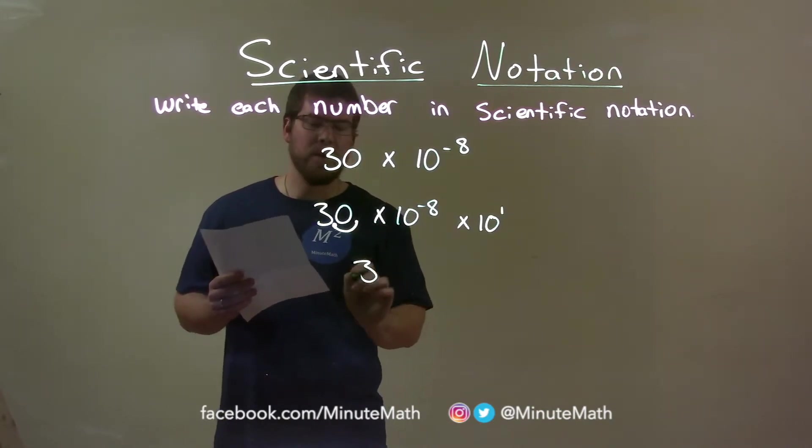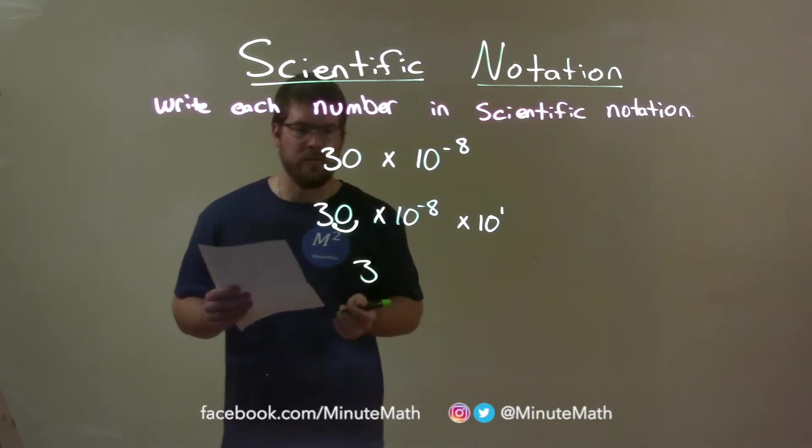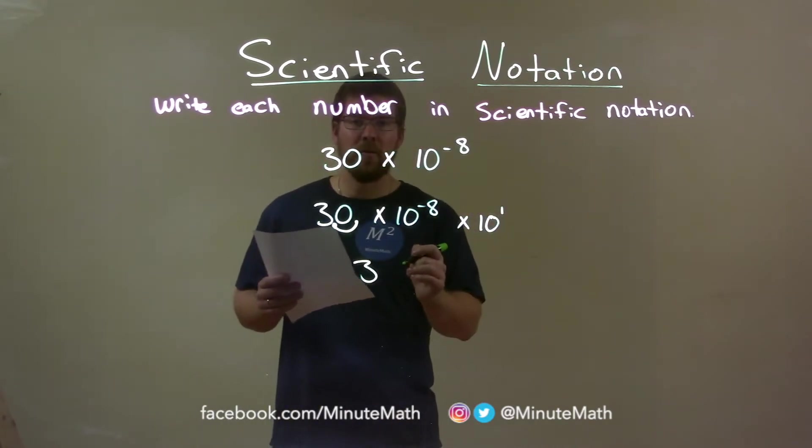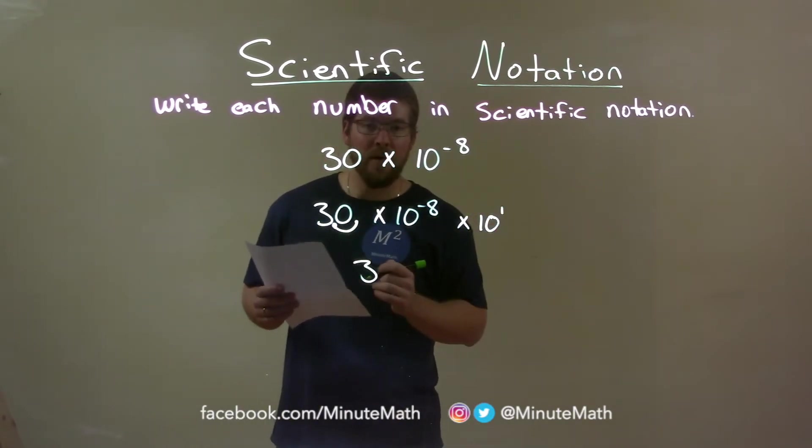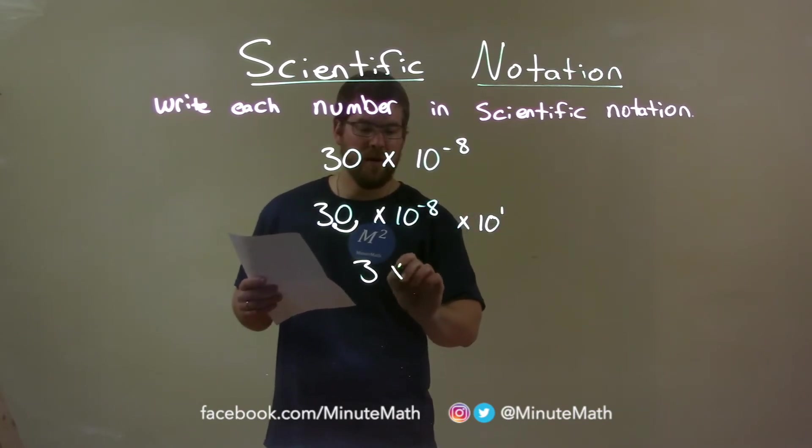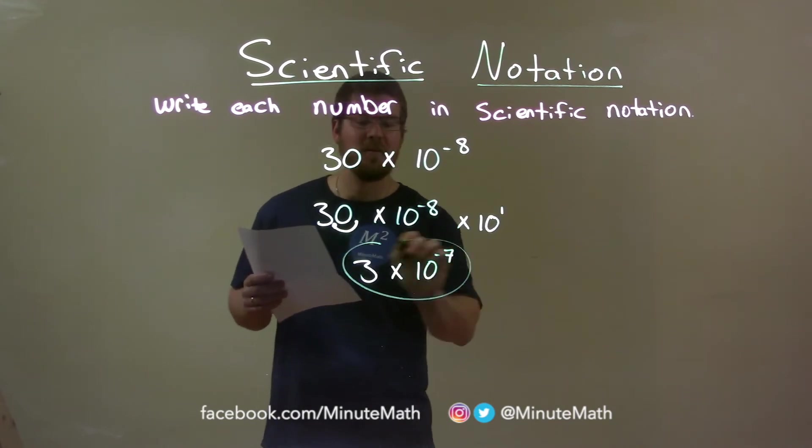We just have 3 here, right? We don't need the decimal place afterwards. Then we have 10 to the negative 8th power times 10 to the first power. Same base, we add the exponents, and negative 8 plus 1 is 7. So, our final answer is 3 times 10 to the negative 7th power.